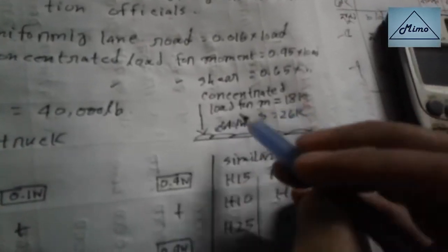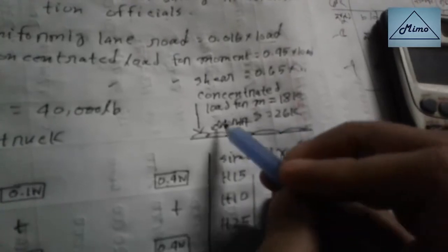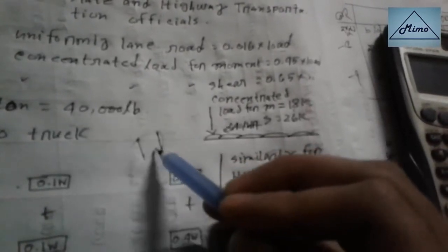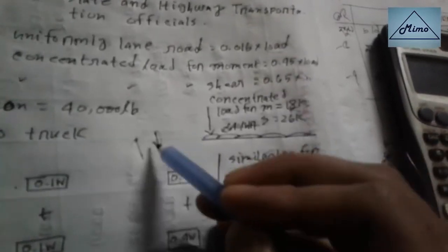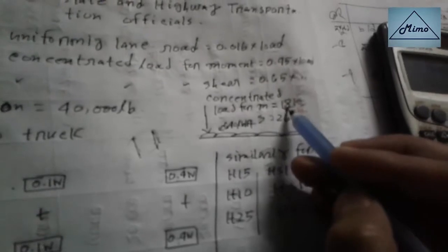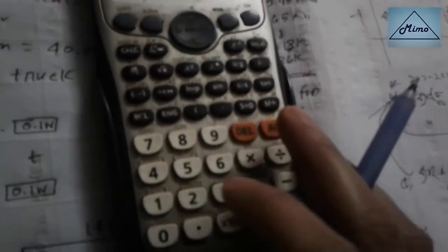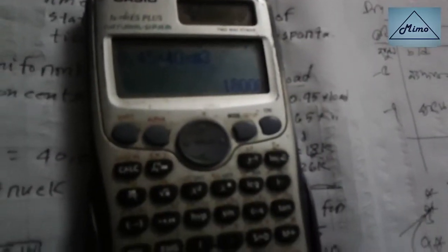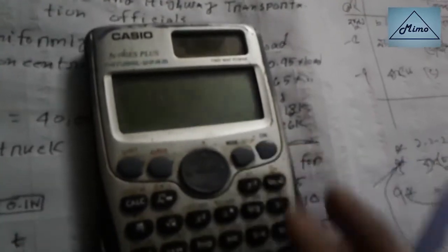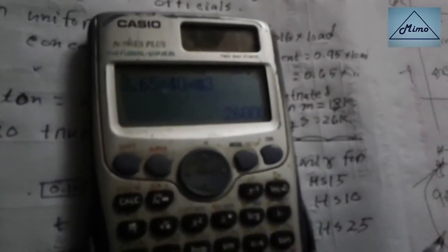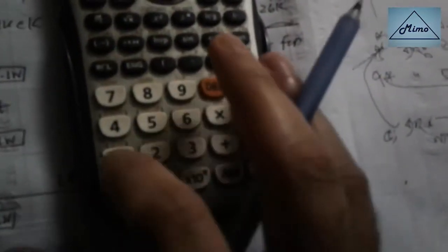For the lane loading, the concentrated load for H20 track is 8 kips for moment. In a lane, if we want to produce moment, this load is required — and it will be 18 kips, calculated as 0.45 times 40,000 pounds, which gives 18,000 pounds or 18 kips. For shear, it is 0.65 times 40,000, which is 26 kips.